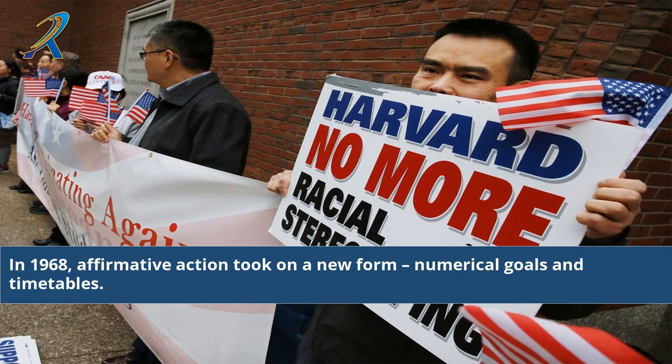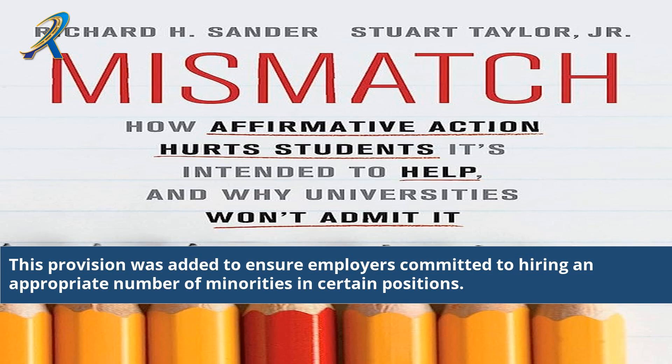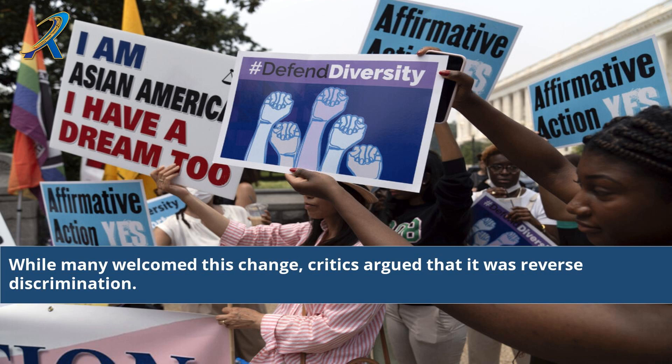In 1968, affirmative action took on a new form: numerical goals and timetables. This provision was added to ensure employers committed to hiring an appropriate number of minorities in certain positions. While many welcomed this change, critics argued that it was reverse discrimination.